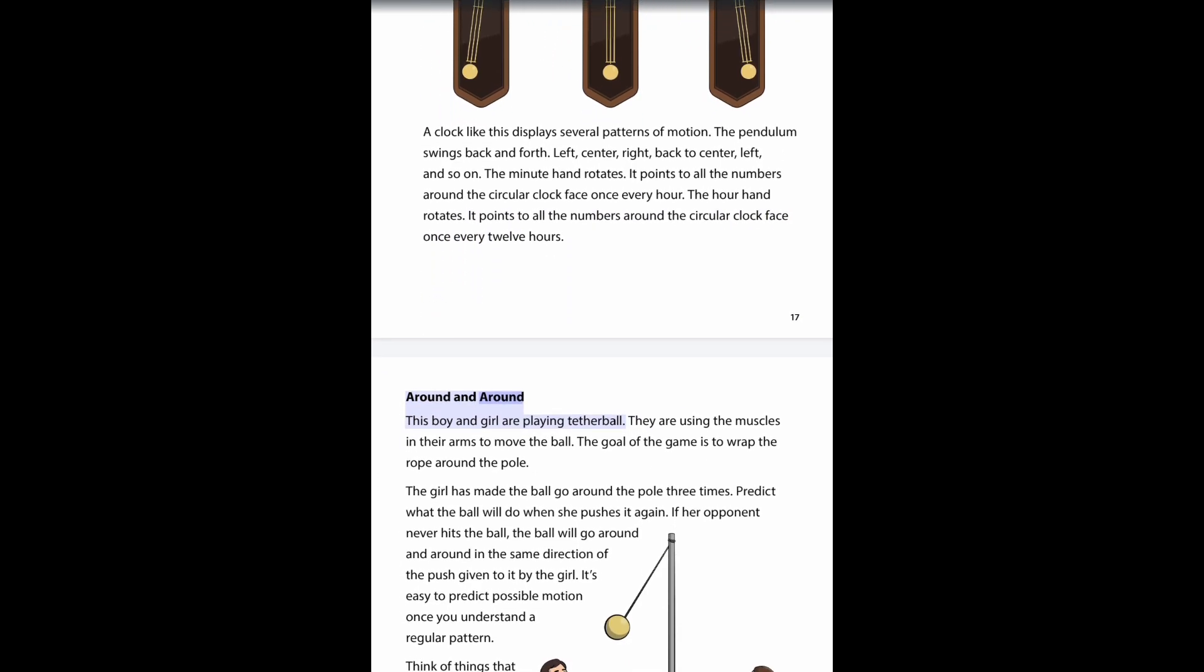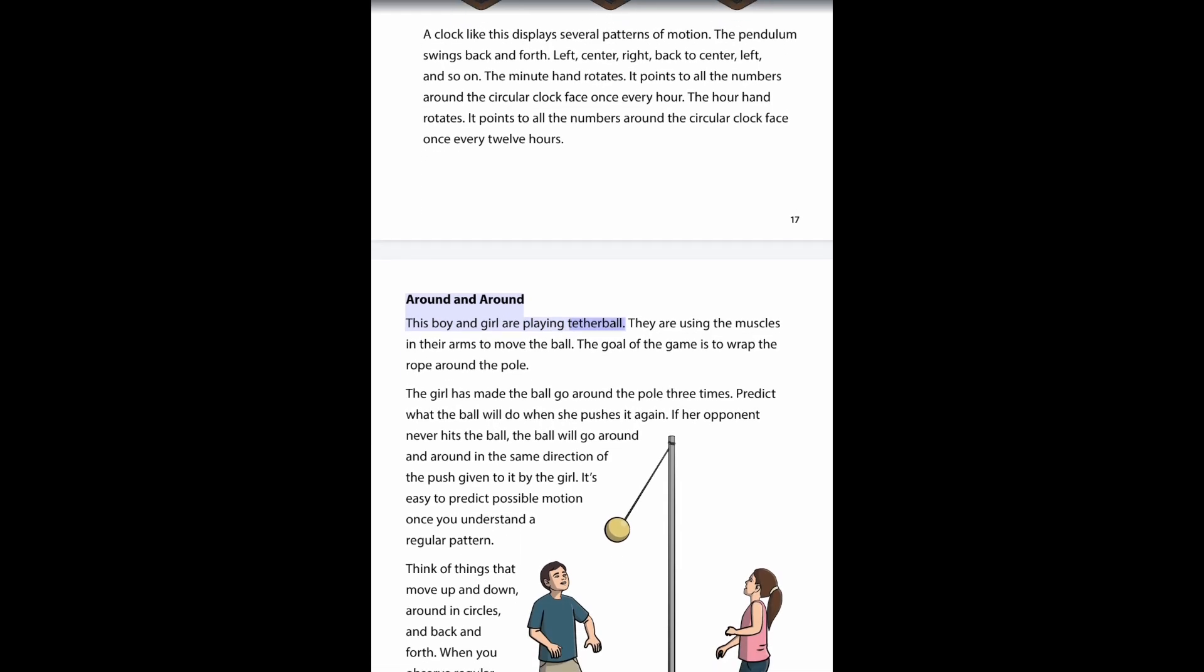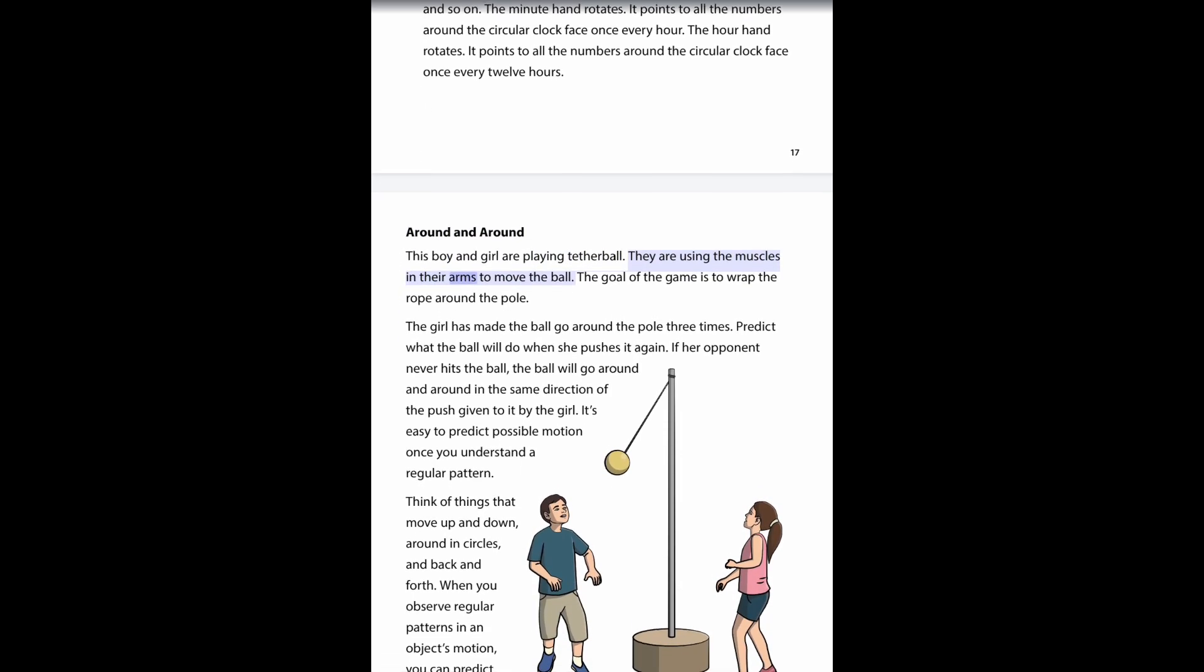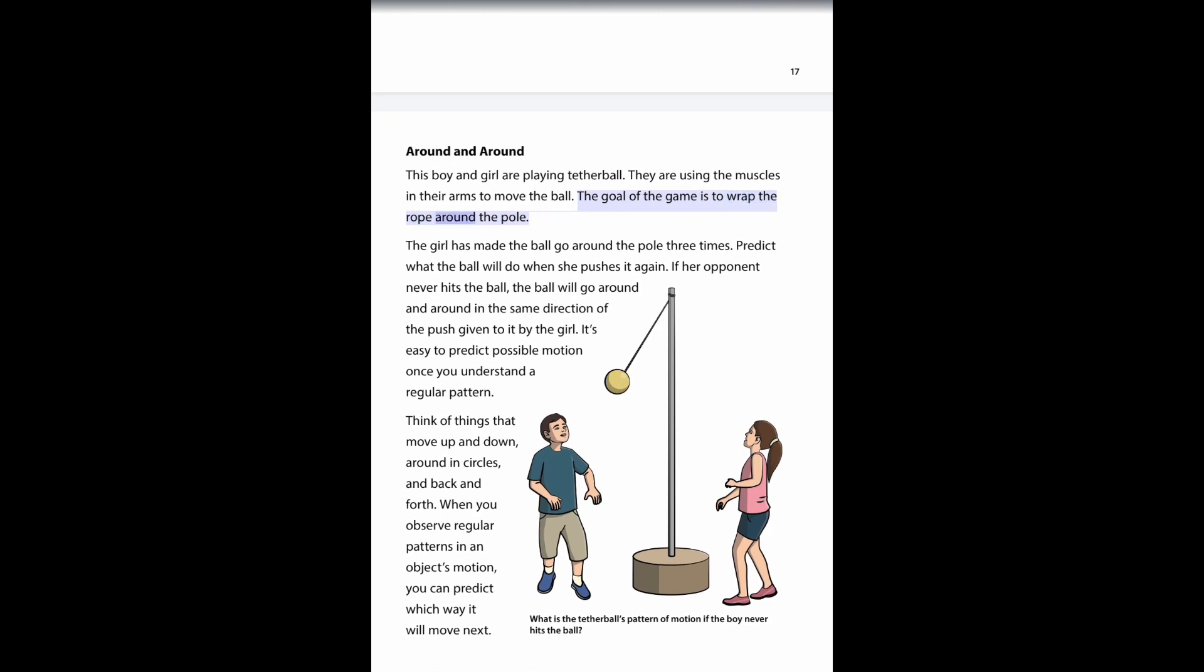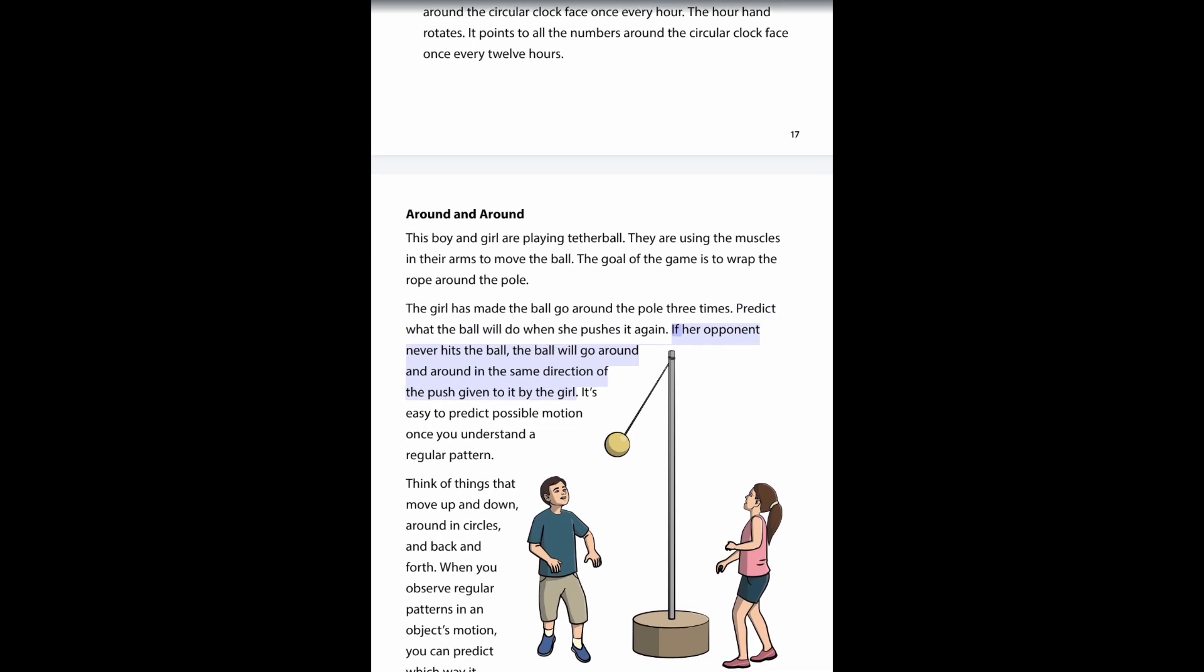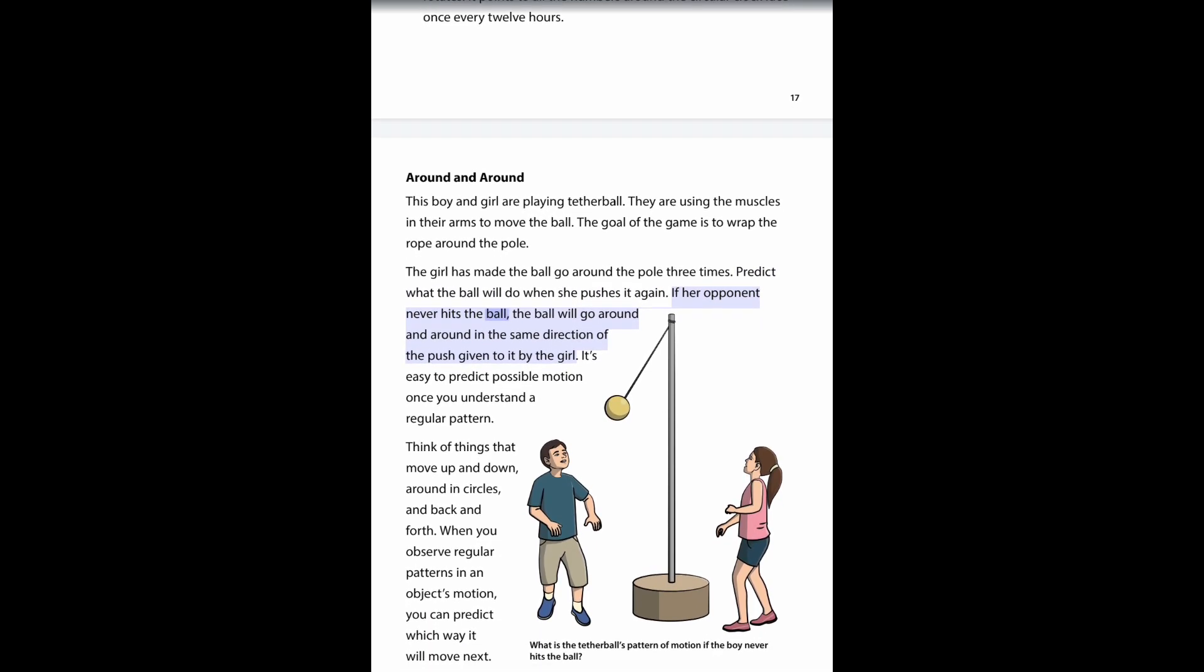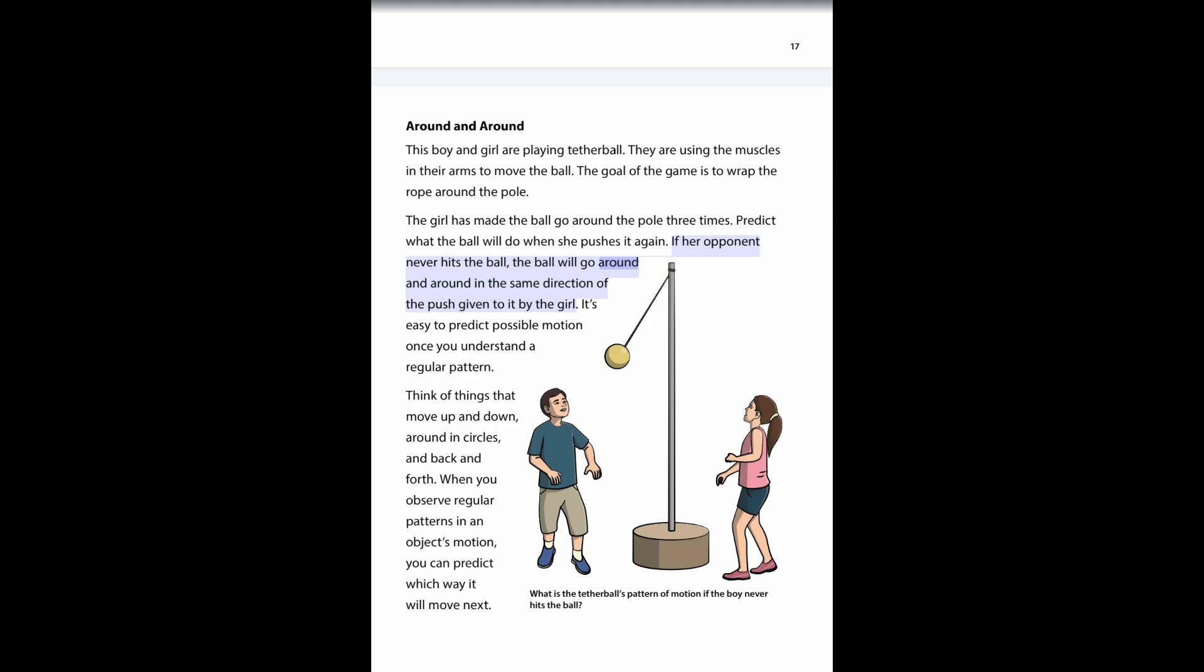Around and around: this boy and girl are playing tetherball. They are using the muscles in their arms to move the ball. The goal of the game is to wrap the rope around the pole. The girl has made the ball go around the pole three times. Predict what the ball will do when she pushes it again. If her opponent never hits the ball, the ball will go around and around in the same direction of the push given to it by the girl. It's easy to predict possible motion once you understand a regular pattern.